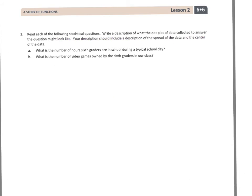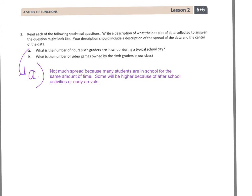Let's take a look at page two. So here we are on page two, and it said, Read each of the following statistical questions. Write a description of what the dot plot of data collected to answer the question might look like. Your description should include a description of the spread of the data and the center of the data. So let's look at A first, and I'm not going to do all of this, but I'll talk about it a little bit. So it says, What is the number of hours sixth graders are in school during a typical school day? The data is not going to be very spread out because most students are in school the same number of hours. You'll have a little varying of the students who come in real early or students who stay late for after school, but the majority of the data is going to be at a specific amount of time because all students or most of them are in school for the same number of time.